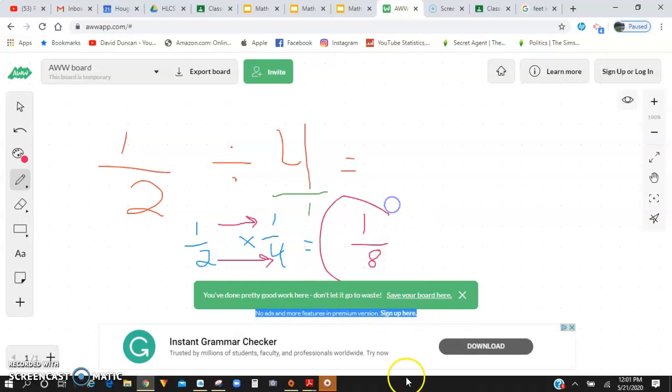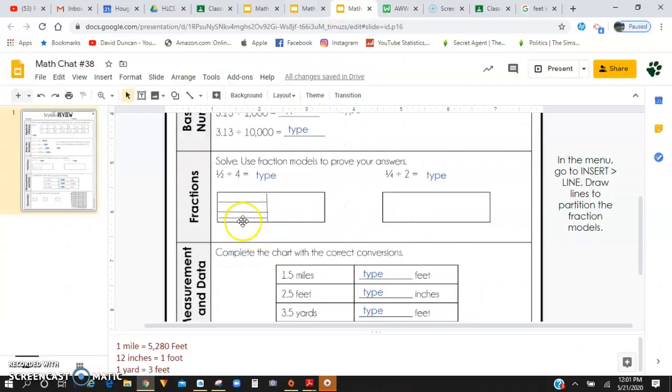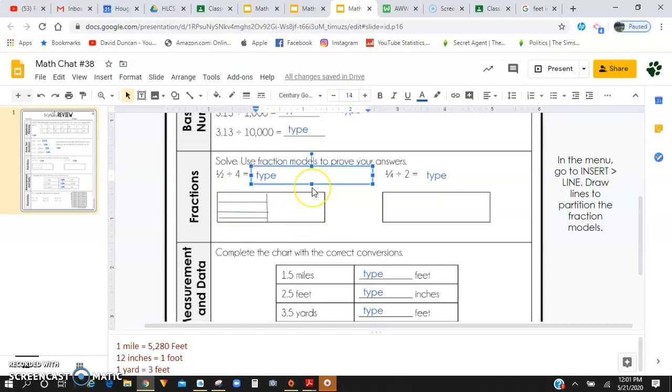So my final answer is one eighth, and if I look at that fraction model that I created right here, if I were to extend these lines all the way over, if I take one half and divide it by four, I'm going to make eighths is what I'm going to make out of this. I'm going to have eighths because I'm going to have four on this side and then four on this side, so I have a total of one eighth.